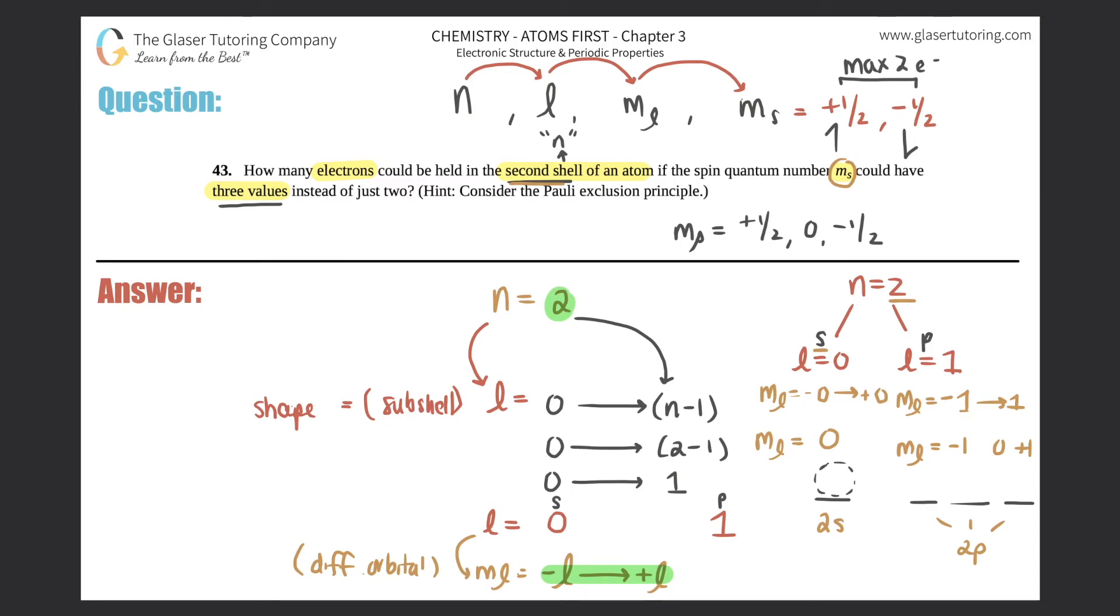So under normal conditions, each one of these would have two, and that's how many total electrons you could have. But now we're saying that everyone has three. So let's pretend that this one is still up, this one is still down, and maybe this one is like this.